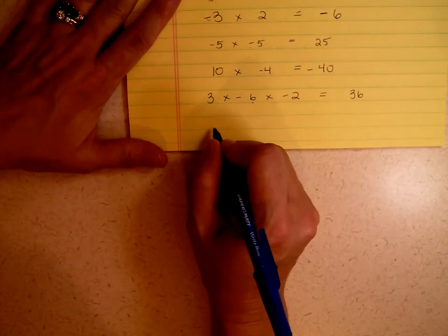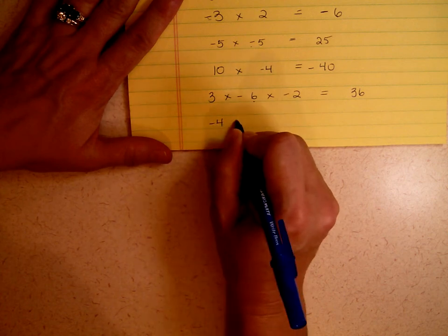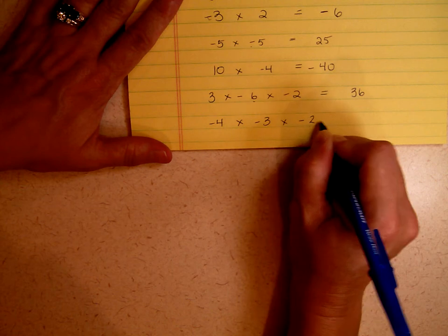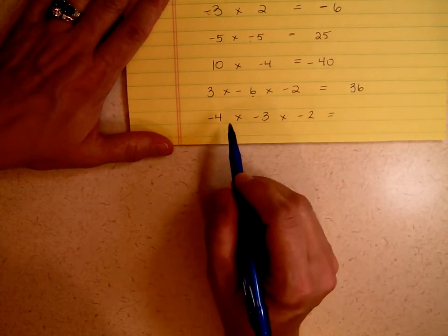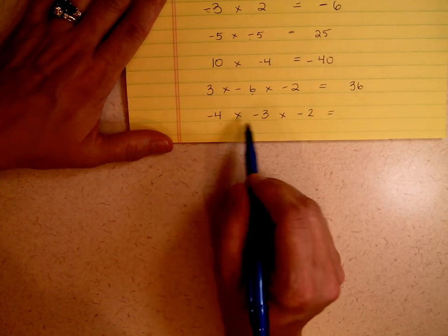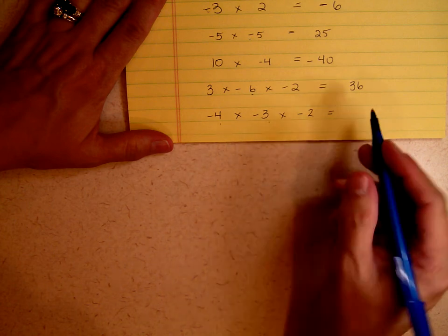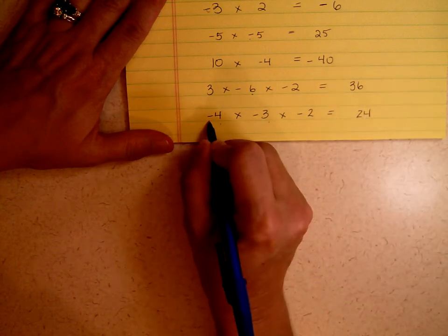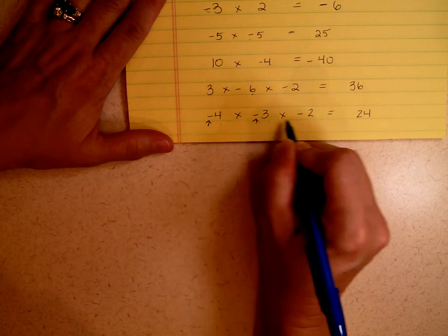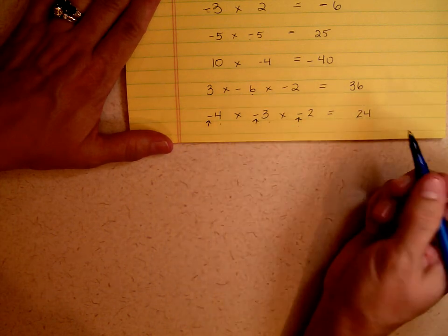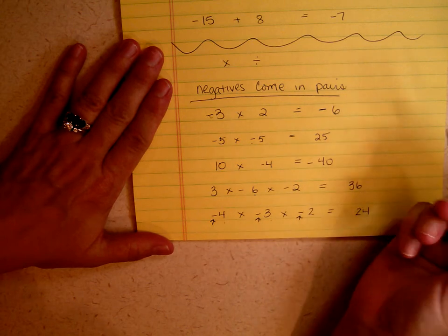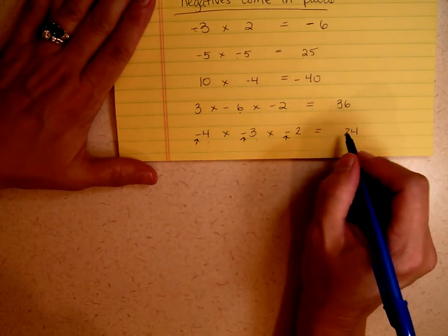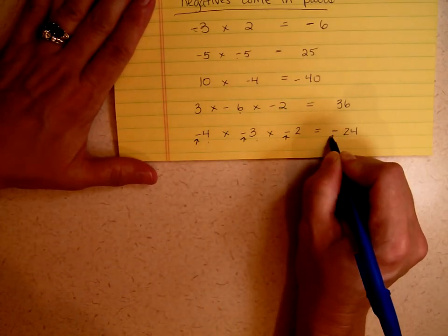Let's try one more: negative 4 times negative 3 times negative 2. 4 times 3 is 12, and 12 times 2 is 24. Is my answer positive or negative? I have 1 negative, 2 negatives, 3 negatives. Remember the rule — negatives come in pairs. That's 3, so I have to make the answer negative so that I have 4.